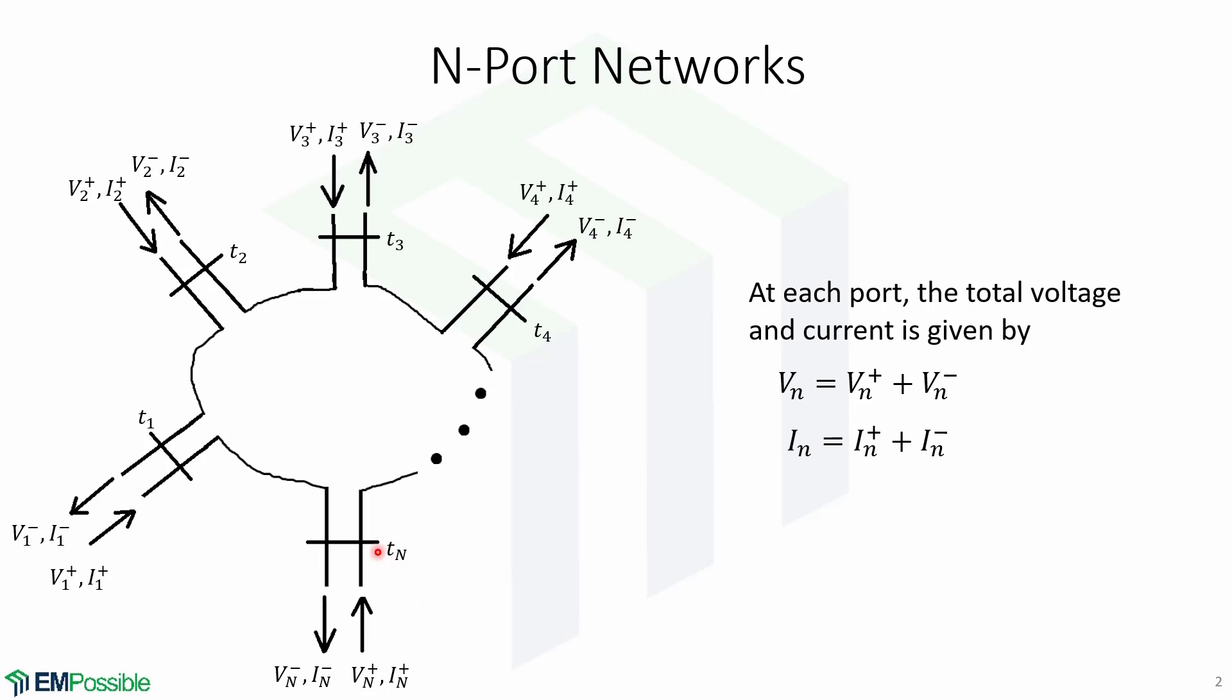At the terminal plane at each port, the total voltage and current is given by this, in which the voltage at a port is equal to the incident voltage plus the reflected voltage, and current at a port is defined by the incident current plus the reflected current.